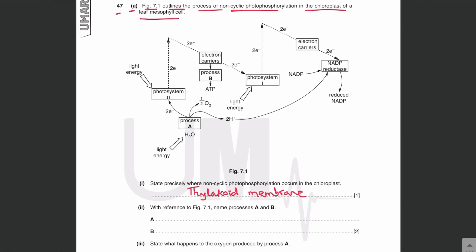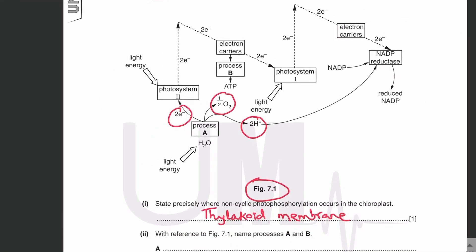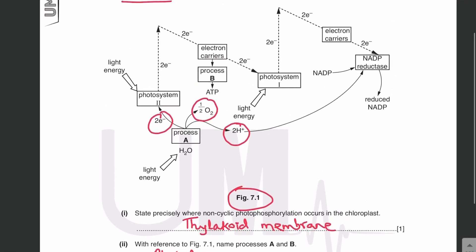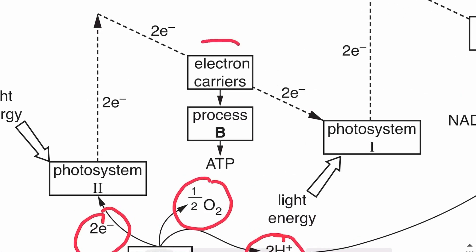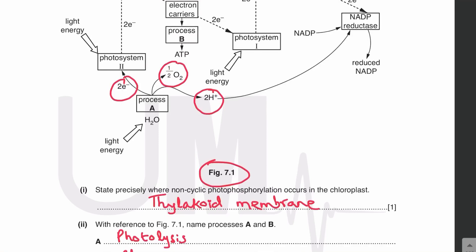With reference to figure 7.1, name processes A and B. In process A, water is splitting into oxygen gas, protons, and electrons — this process is known as photolysis, which results in splitting of water using light energy. Process B involves the formation of ATP: electron carriers provide energy to pump protons from the stroma to the thylakoid space, protons then move down the concentration gradient, and ATP is made by the process of chemiosmosis by ATP synthase. So process B is chemiosmosis.